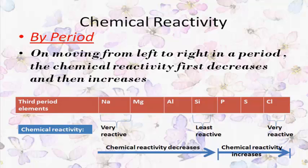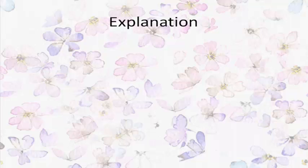From phosphorus onward, the chemical reactivity keeps on increasing, and chlorine is the most reactive element in the third period. How is it possible to have such variation of chemical reactivity in one period? The valence electrons of the period keep on increasing first and then decreasing, and this variation in valence electrons is the basic reason why chemical reactivity first decreases, then increases.